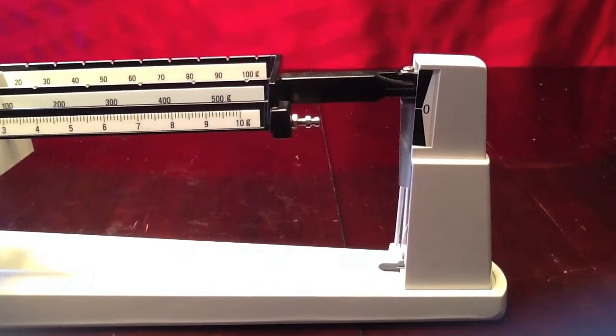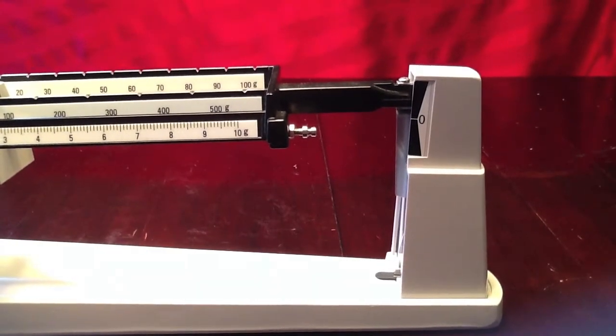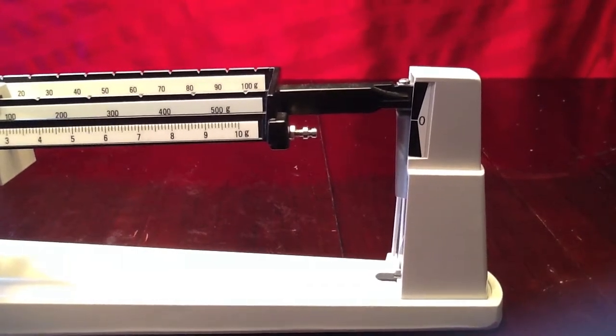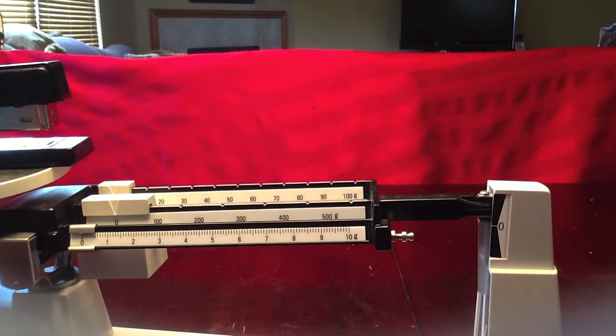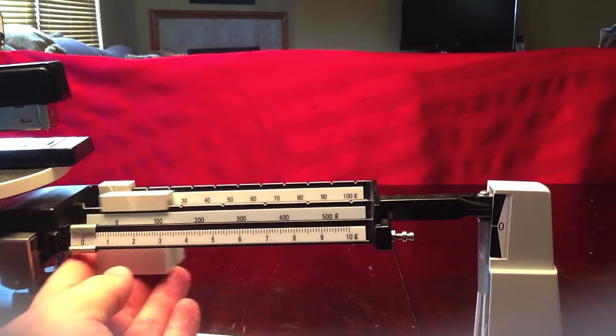With our stapler on the pan, we notice that our arrow is well above zero. So our first step is to move our 100 gram rider. We're going to move our 100 gram rider until our arrow falls below the zero.